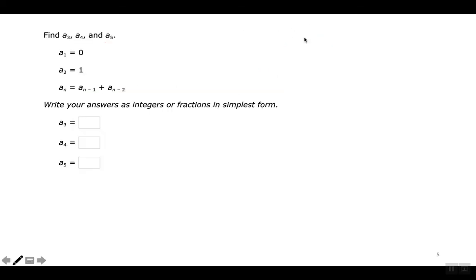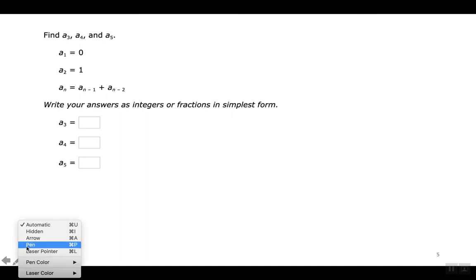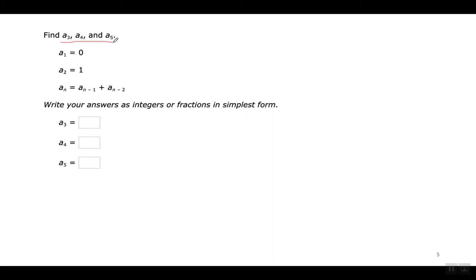That one was easy. Now we've got to find three answers: the third, the fourth, and the fifth term. Ahora tenemos que encontrar tres respuestas — el término tercero, cuarto, y quinto. It tells me what the first term is and what the second term is. Me está dando lo que es el primer término en la secuencia y el segundo.